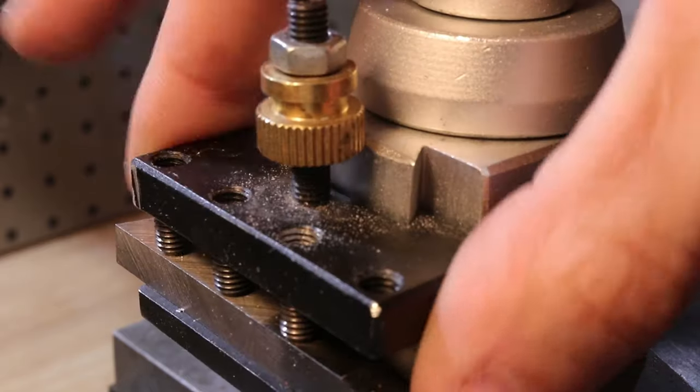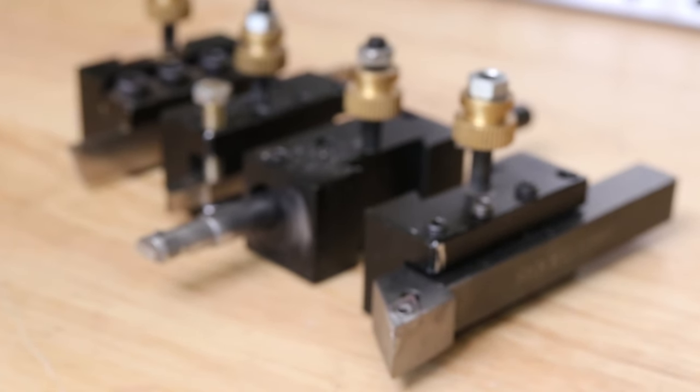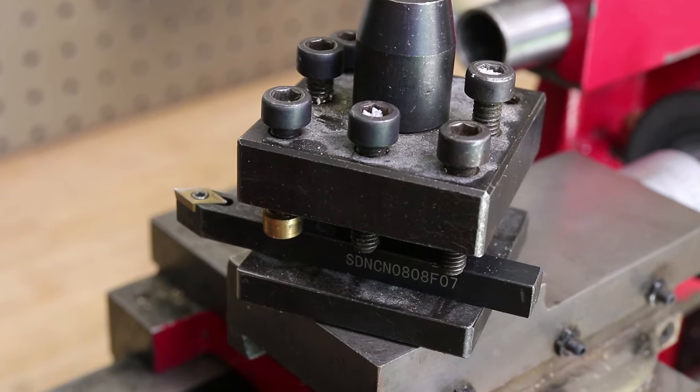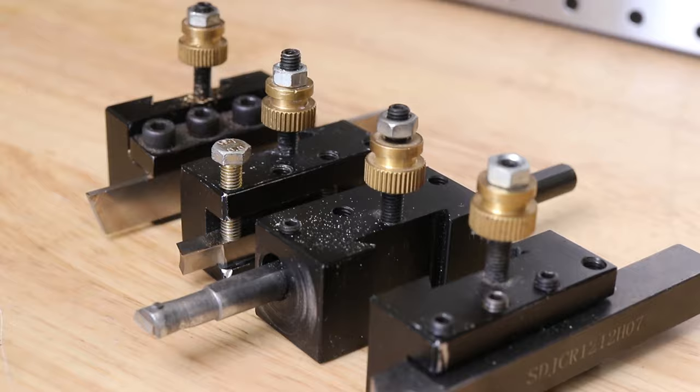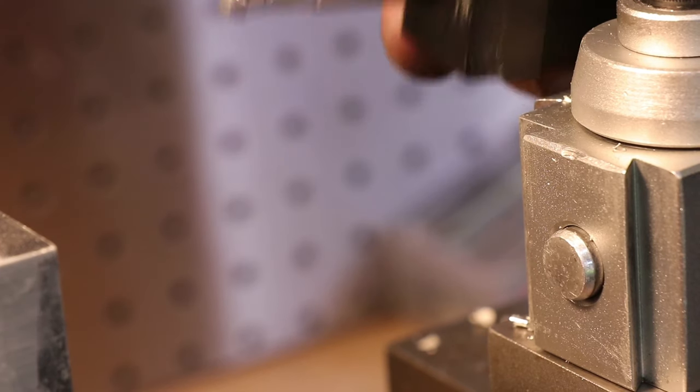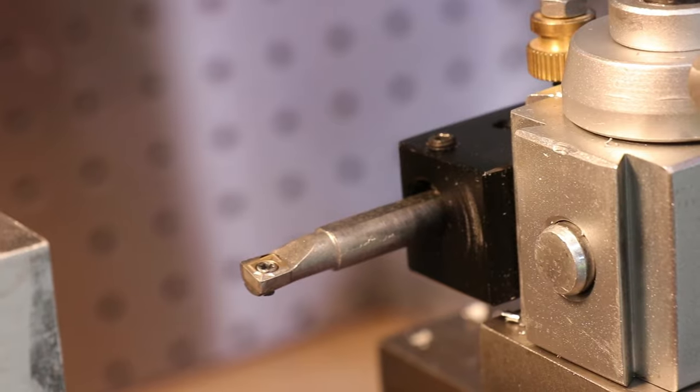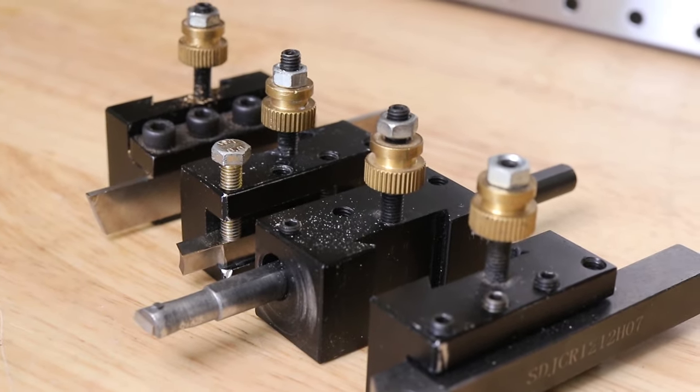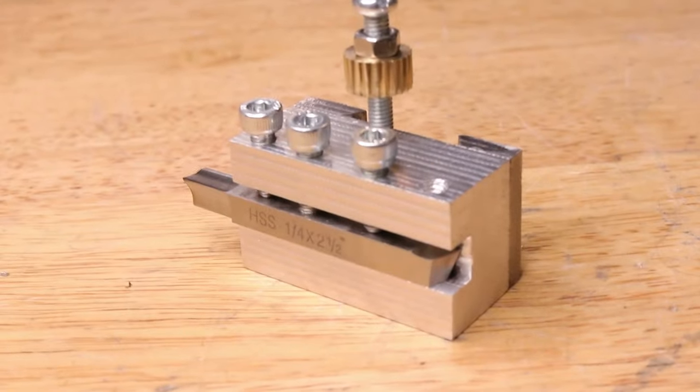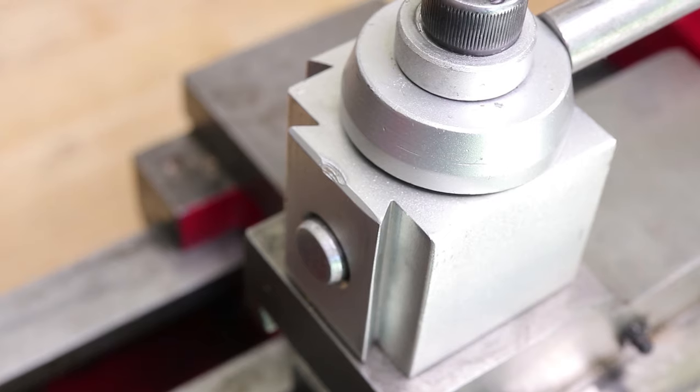And the first accessory that I would buy would be a quick change tool post. These aren't essential for mini lathe use, but once you use one you'll probably never go back to the old 4 way tool post. A quick change tool post allows you to place a tool in a tool holder, set the height once for centerline, and in a few seconds the tool can easily be swapped in and out. Naturally you will be limited by the number of tool holders that you have, but you can easily buy some more after the fact, or you can easily machine them yourself if you have the correct machinery.